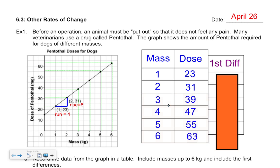You can start to fill in this table. We're looking at mass from one to six kilograms — these are only little dogs — and these dose numbers are read directly off the graph. For mass = 4, I go straight up to that point and read across to get 47. That shouldn't be too hard. Now pause the tape and calculate the first differences on your own — that's what we did a couple days ago. Pause it now and make sure you get the same thing I get.